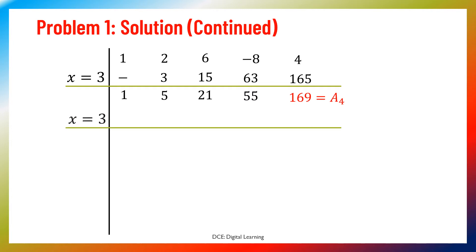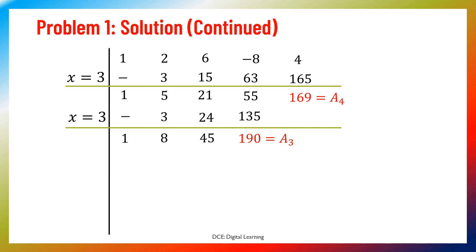Divide again by (x−3), multiplier x equals 3. Keep leading coefficient 1 as it is. Multiply 3 into 1 to get 3; add 5 and 3 to get 8; multiply 3 and 8 to get 24; add 21 and 24 to get 45; multiply 3 and 45 to get 135; add 55 and 135 to get 190, which is a₃. Divide again by (x−3), multiplier x equals 3; keep leading coefficient 1; multiply 1 and 3 to get 3; add 8 and 3 to get 11.